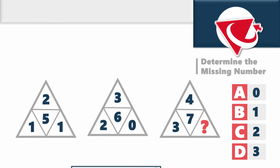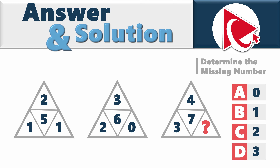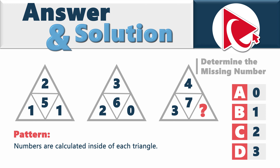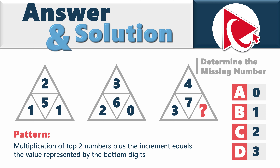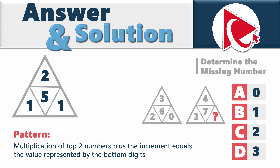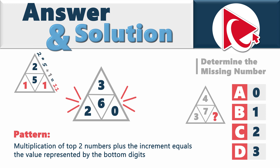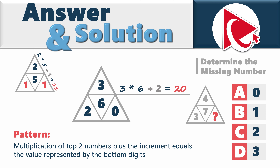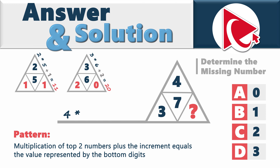Are you ready with your solution? Let's proceed so we can compare the answers. I'm sorry, I couldn't resist and I tried to trick you. I hope you didn't fall for it. The numbers here are calculated inside each triangle, not across the triangles. The pattern is that multiplication of the top two numbers plus an increment equals the value represented by the bottom digits. For example, in the first triangle: 2 multiplied by 5 plus 1 (1 is the increment) equals 11. In the second triangle, the increment increases to 2: 3 multiplied by 6 plus 2 equals 20. So the missing number is calculated as 4 multiplied by 7 plus 3 equals 31. The missing number is 1, and the correct answer is choice B: 1.